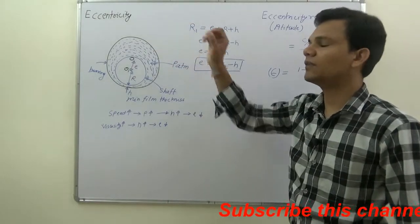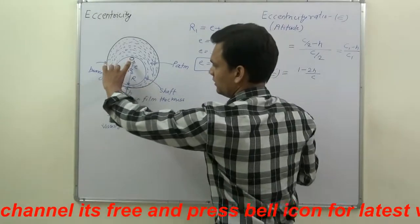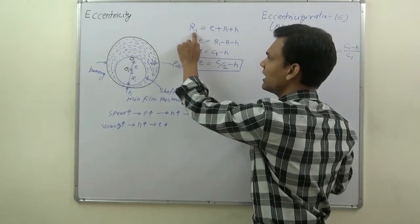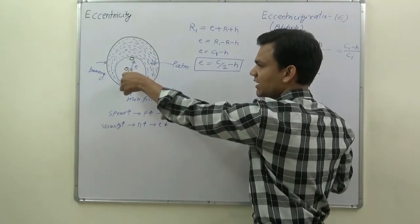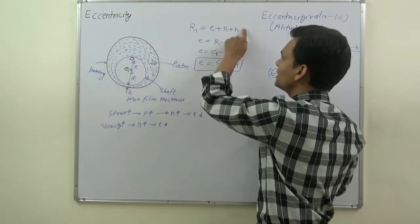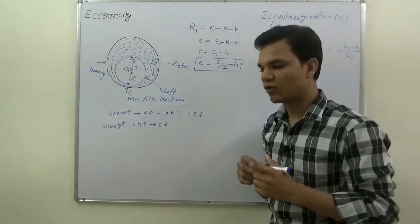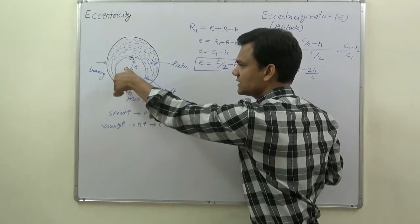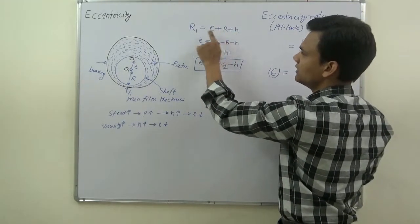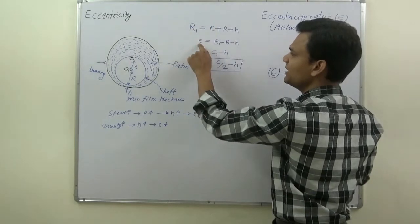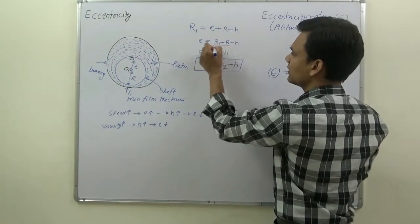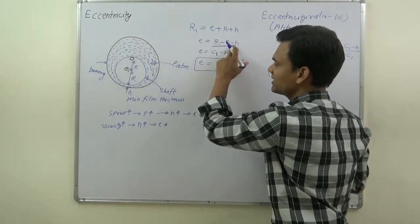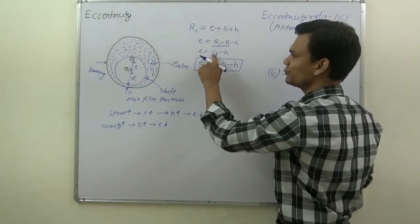We calculate a formula for eccentricity. From O to the outer periphery is the radius of the bearing, shown as R1. R1 equals E, which is eccentricity, plus R, the radius of the shaft, plus H, the minimum film thickness. We want to write this in terms of radial clearance. Radial clearance is the difference between the radius of the bearing and the radius of the shaft. So E equals R1 minus R, which is radial clearance, minus H. I am showing this radial clearance as C1.